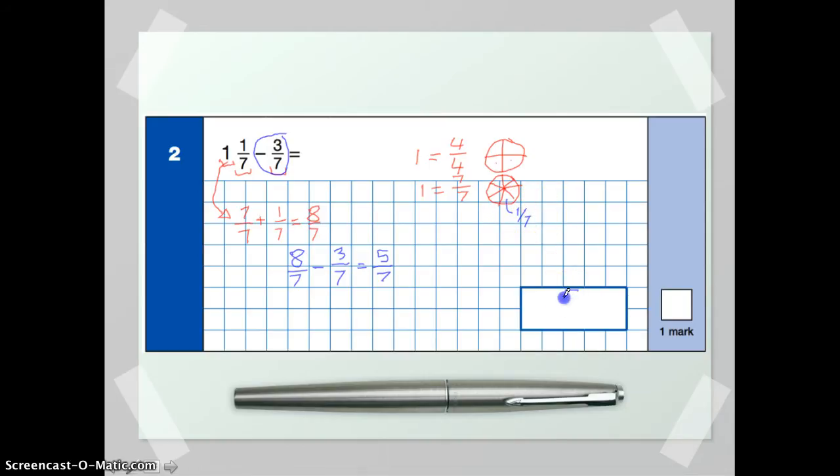And then all you need to do is then put your answer in the box there. And that's what the examiner will be looking for. So just to recap that, first of all, turn your mixed fraction into a top-heavy fraction. So convert your whole number into an expression of the denominator here, so sevenths. So in this case, we have one lot of seven over seven.